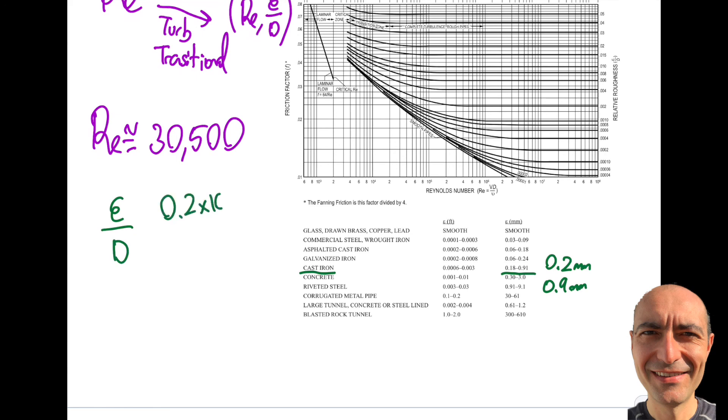0.2 times 10 to the minus 3, that is in meters, and the diameter will be 10 centimeters, so that's going to be 0.1. That is on the lower end, and the upper end is going to be 0.9 times 10 to the minus 3 divided by 0.1. So you can see in here, my f will be determined by this 30,500 Reynolds number, and then at the lower end I'm going to get 2 times 10 to the minus 3 as my epsilon over D, or I'm going to get 9 times 10 to the minus 3 so that I'm in that particular range. I wasn't being specific.